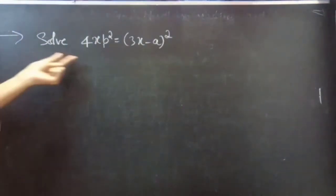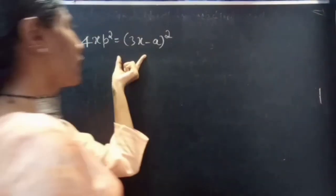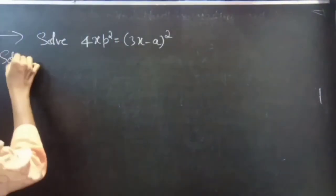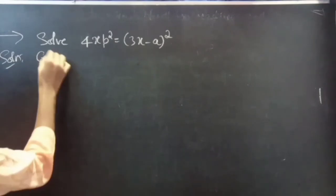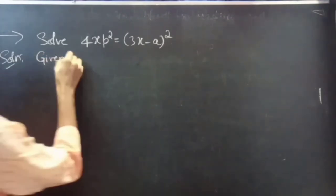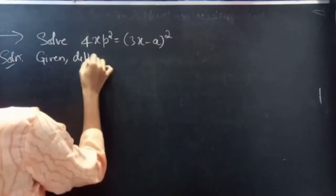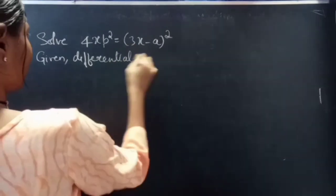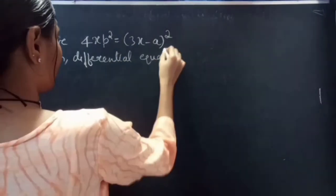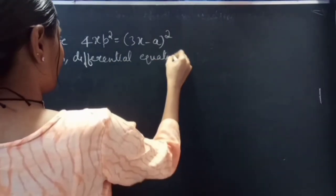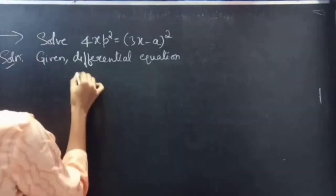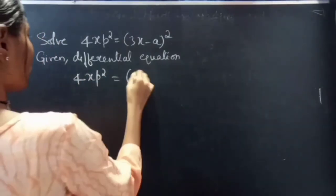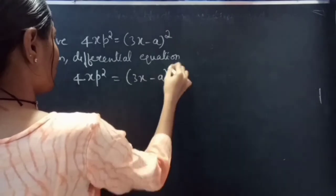Problem: Solve 4x·p² equals (3x − a) whole square. Given the differential equation: 4x·p² equals (3x − a) whole square.